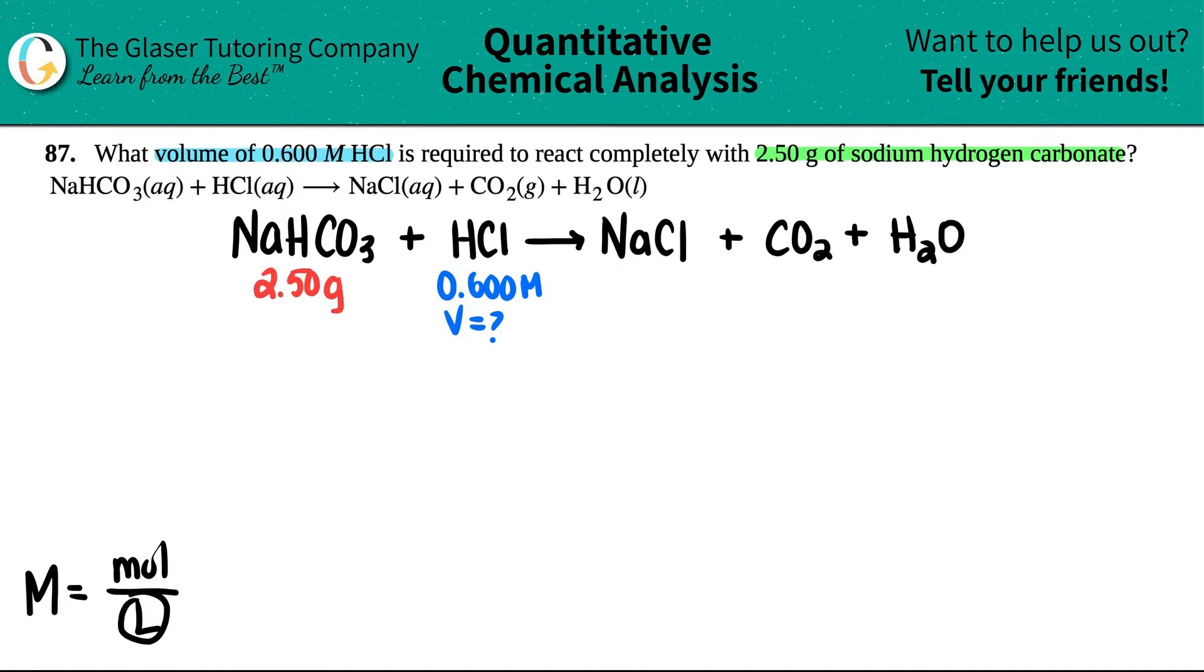It would basically just be liter equal mole divided by molarity, and then I would get the volume. I would get the liters. You could leave it as molarity equals moles over liters. I'm just doing this just for simplicity of the video, but we'll get the same answer at the end. Now they told me what my molarity was already. I know what my molarity is 0.600 molarity. If I'm trying to solve for this, that means I should know the moles of HCl, but I don't.